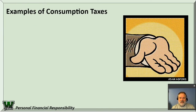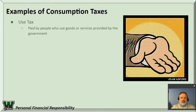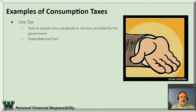Some examples of consumption tax: use tax. This is paid by you who use a good or service provided by the government — like state or national parks. You go in and pay to use a state park or a national park, or you go to park at the lakefront — that's really a use tax. There are also gasoline taxes dedicated specifically to road quality, as little add-on taxes.